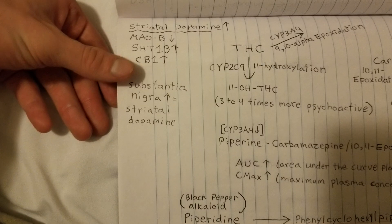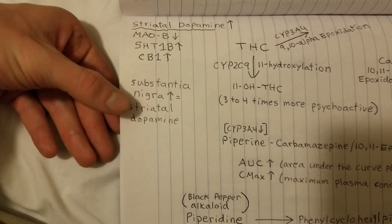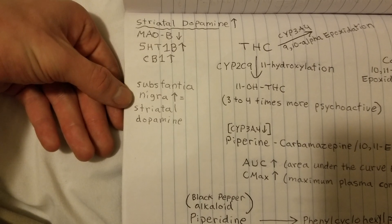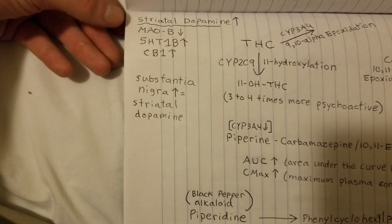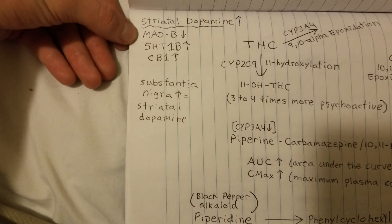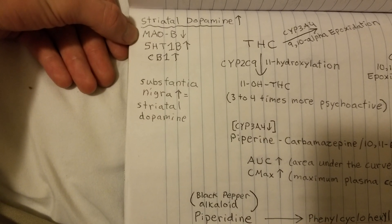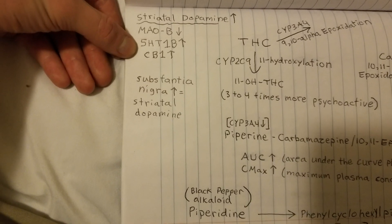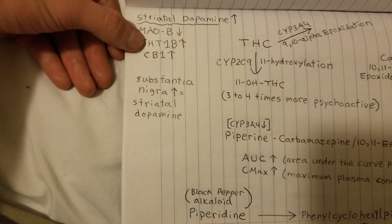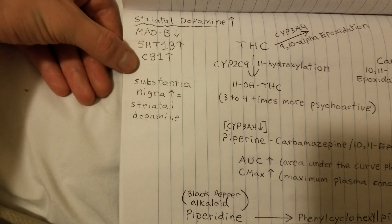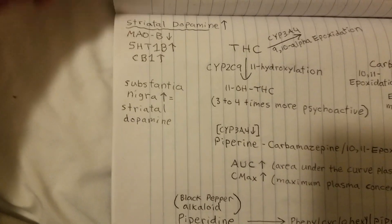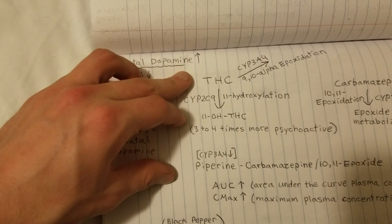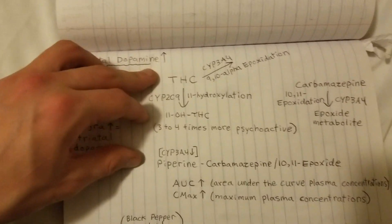There are different mechanisms by which you can increase striatal dopamine, which involves the striatum and voluntary movement. The substantia nigra increases striatal dopamine when it becomes more active, by inhibiting the MAO-B enzyme, by increasing the activity of the 5-hydroxytryptamine 1B serotonin receptor, and increasing the CB1 cannabinoid receptor — which is how THC gets broken down in your body.